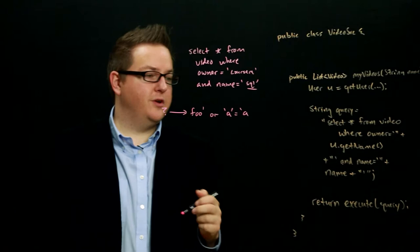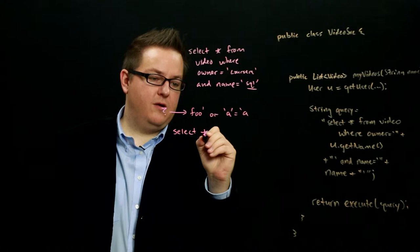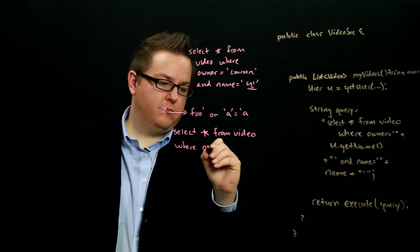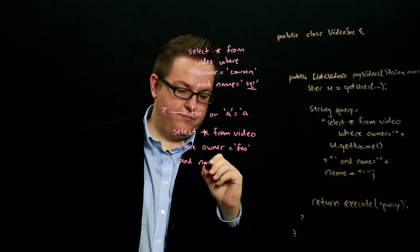We get select star from video where owner equals Foo. Now, things start to get more interesting and we say and. Now, we need to go and substitute in the rest of the strings. We see and name equals, it has an apostrophe here.